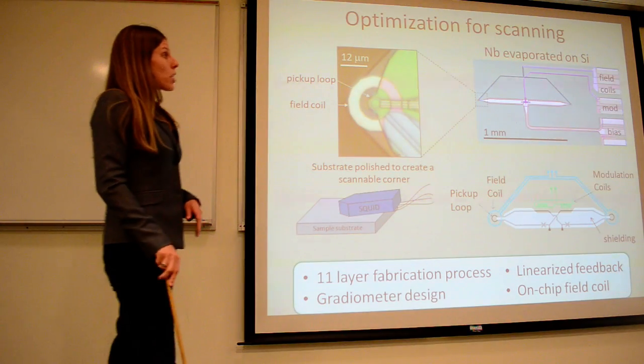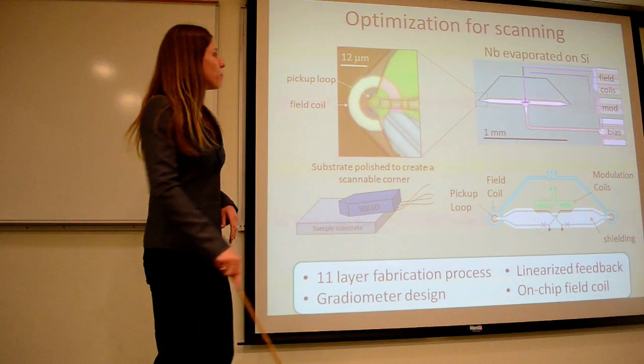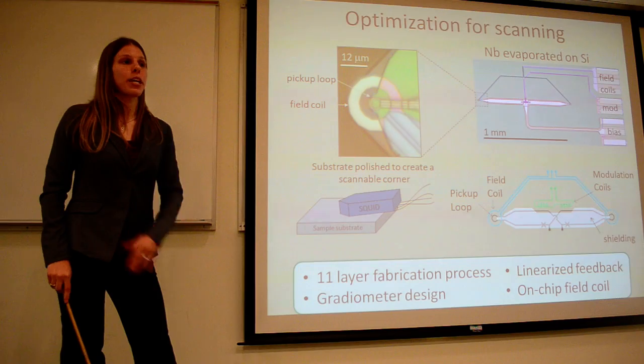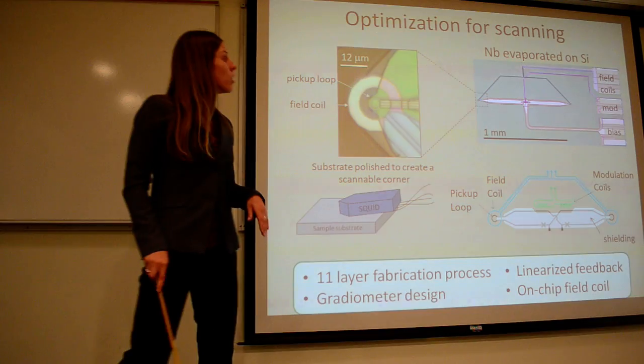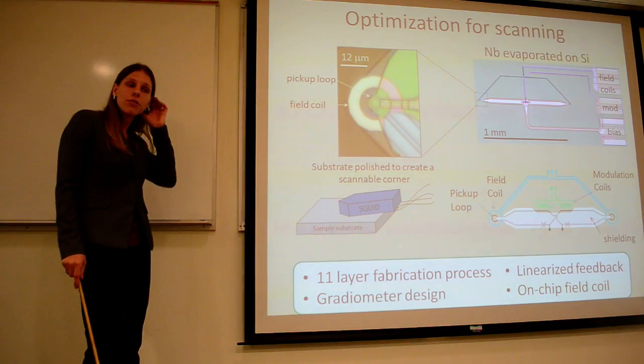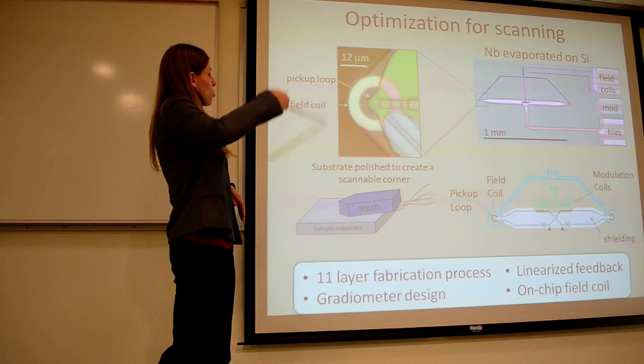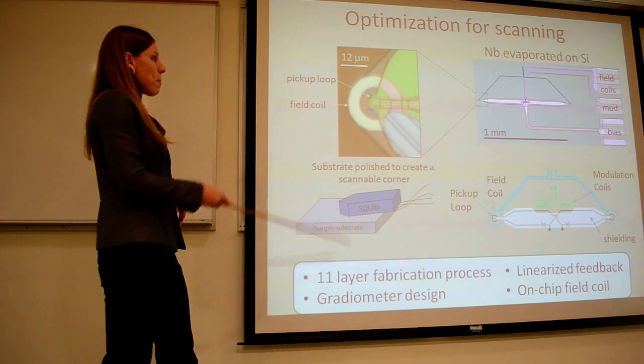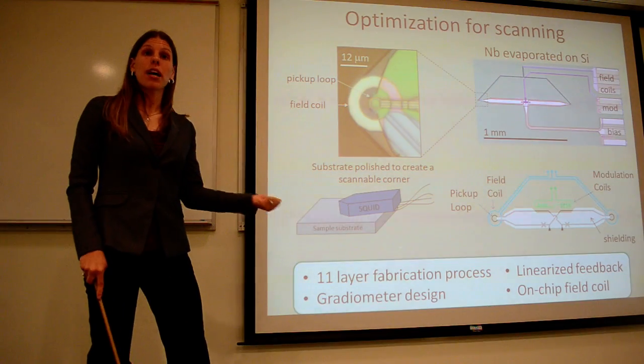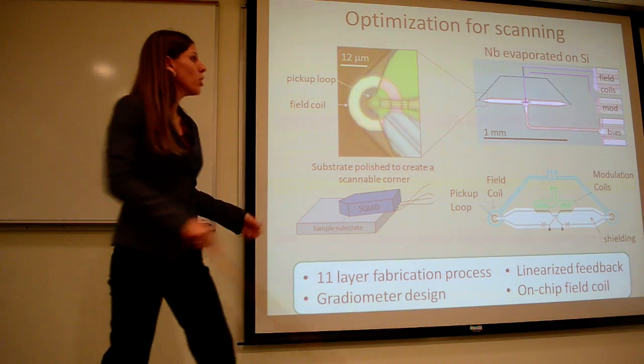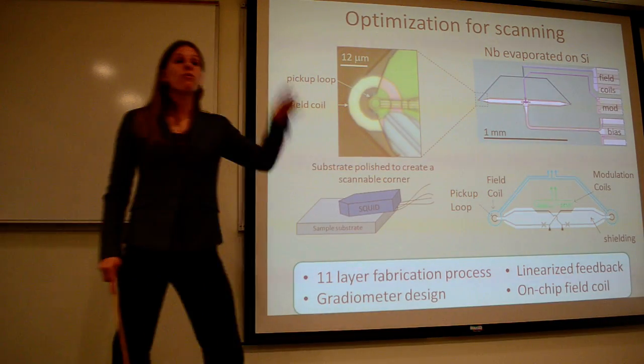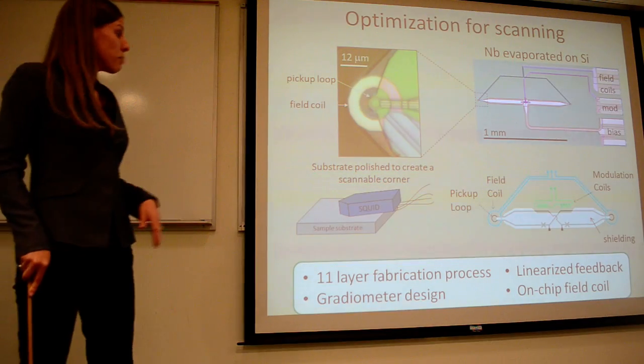So this is what the squid actually looks like. It's a niobium evaporated on silicon process that's with 11 layers of fabrication to get all the shields and all the vias and everything else from shorting. We make these in collaboration with Martin Huber at UC Denver. And this actually is a zoom in of the pickup loop. This is on the side of the squid that we would bring in close contact with the sample. So this is the side that's actually going to be measuring the sample, whereas this one is going to be the balanced one. It looks identical to this, but it's going to be far away. And so you get this differential that I was just mentioning.